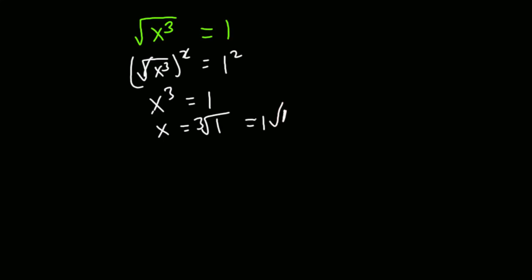So what do we do? We continue by noting that x³ = 1 is the same as x³ minus 1 equals 0. We make the right-hand side zero. Because this is a cubic function, we have to apply the cubic principle to solve for x.